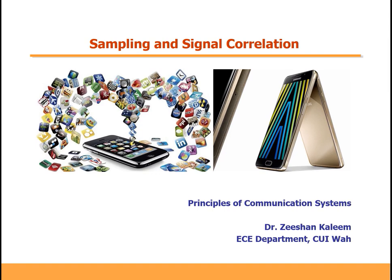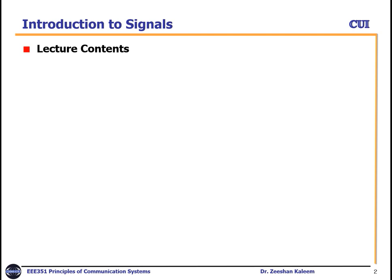Bismillahirrahmanirrahim. Today's topic is Sampling and Signal Correlation, under the course Principles of Communication Systems. I am Dr. Zishan Kaleem from the EC Department, CUI UR campus. Let's move towards the lecture contents. First, we will cover what is sampling, and secondly we will discuss signal correlation.